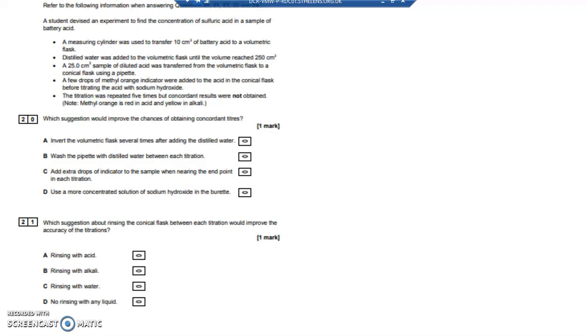The titration was repeated several times, but concordant results, where there's no larger than 0.1cm³ between any of the two titrations, were not obtained. What suggestion could be used to improve the chances of obtaining concordant titres?